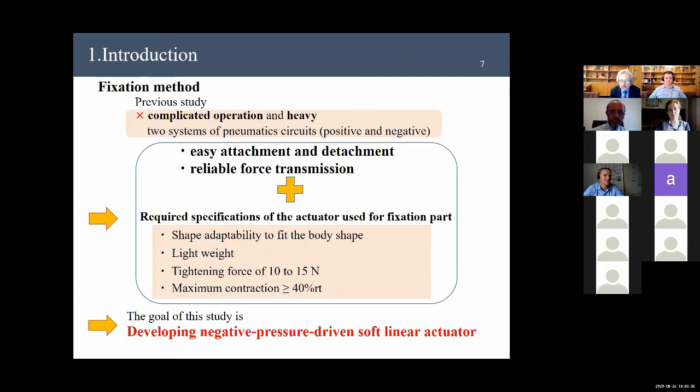Required specification of the actuator is shape adaptability to fit the body shape, light weight, tightening force of 10 to 15 newton, and maximum contraction over 40%. It is determined by preliminary experiments. In the experiment, we determined enough power to fit was around 10 newton, and we subjectively measured the upper limit range of the tightening force that does not feel uncomfortable. The target contraction rate was set to satisfy that parts such as hand and feet pass through the fixed part. In particular, in case of the fixation of the curve, the highest contraction rate is required, and its value is 40%.